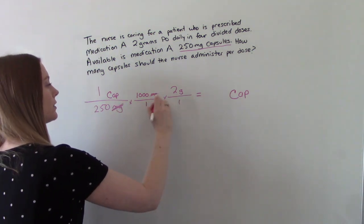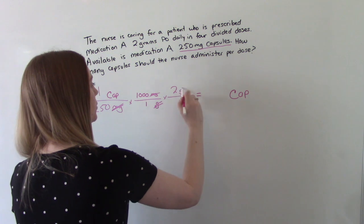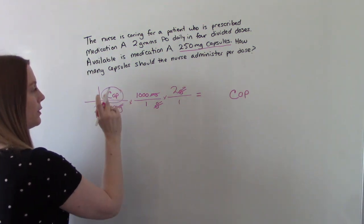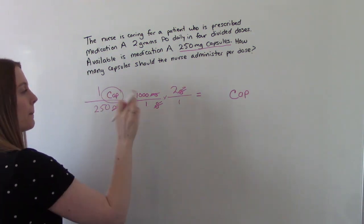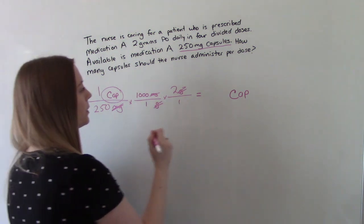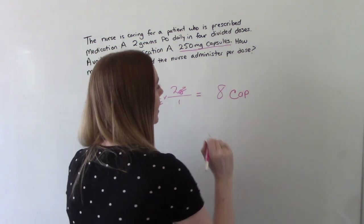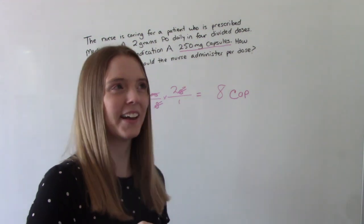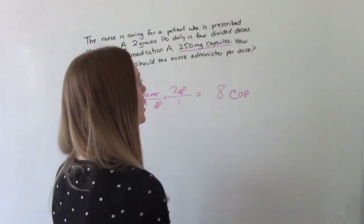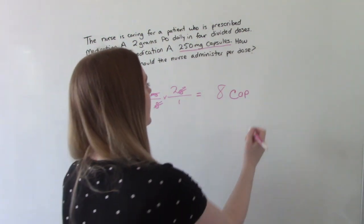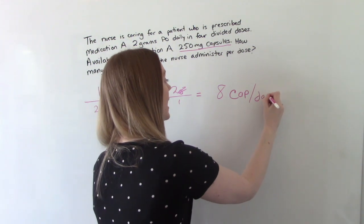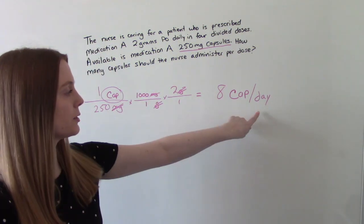So our milligrams will cancel. Our grams will cancel. So we'll end up with just capsules, punch it in, do the math, and you get eight. Now you might be thinking, that's a lot. That's a lot of capsules to give to somebody. So this is how much they're getting total per day. Eight capsules in a day. So now we need to do the rest of the problem.